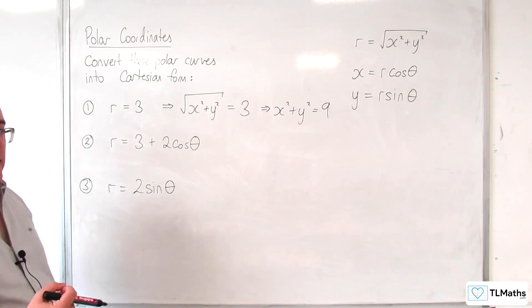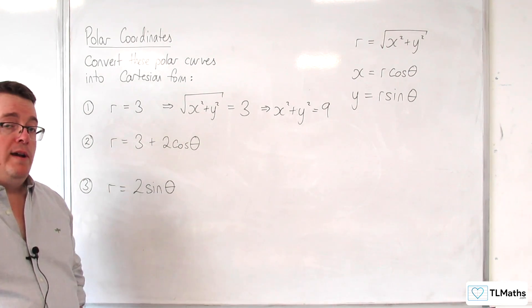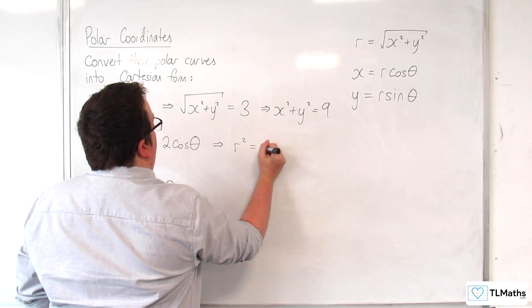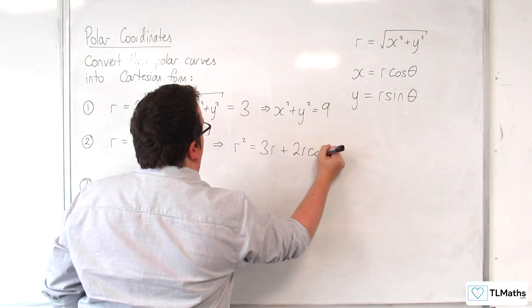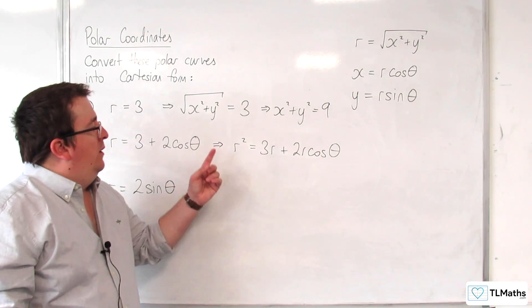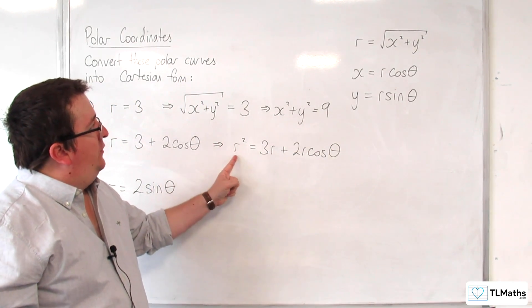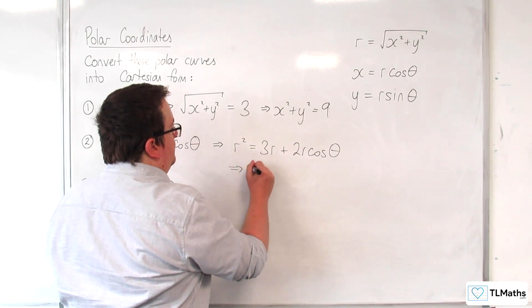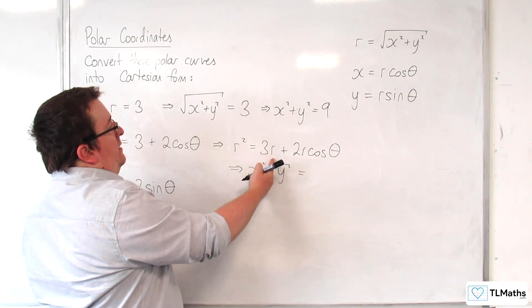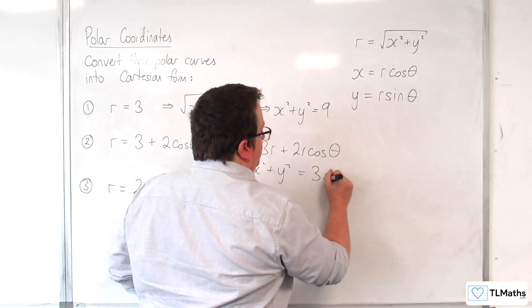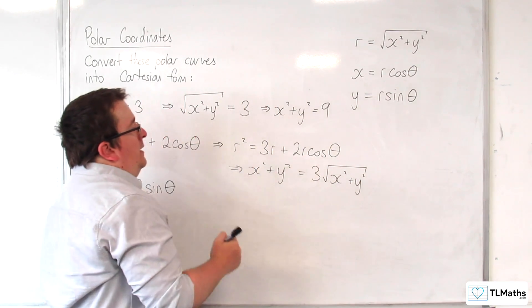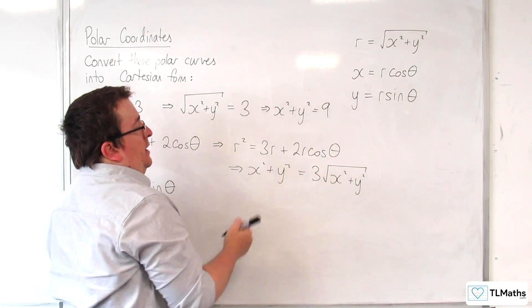Well, the way to get around that is if we multiply through by R, we get R squared is equal to 3R plus 2R cosine theta. Now why would we do that? Well, now I can replace the R squared with x squared plus y squared. I can replace the R with the square root of x squared plus y squared. And the R cosine theta I can replace with x.